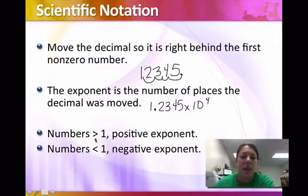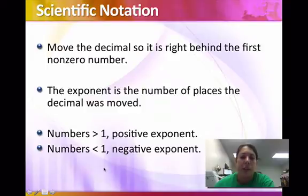And then if I look, if my number is bigger than 1, which that one was because it was 12,345, then I have a positive exponent. If my number would have been a decimal number to start with, then I would have had a negative exponent. But we're going to practice this on the next slide.